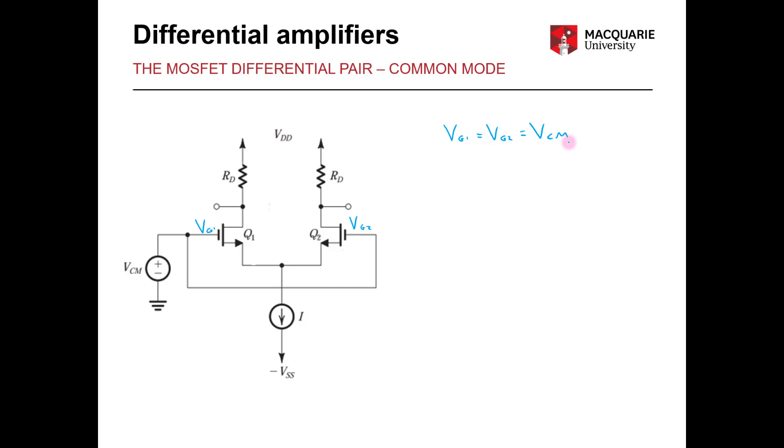So what is the output? And in this case we will derive the differential output. That is the difference between the two output terminals VD1 and VD2. So Vout equals VD1 minus VD2.